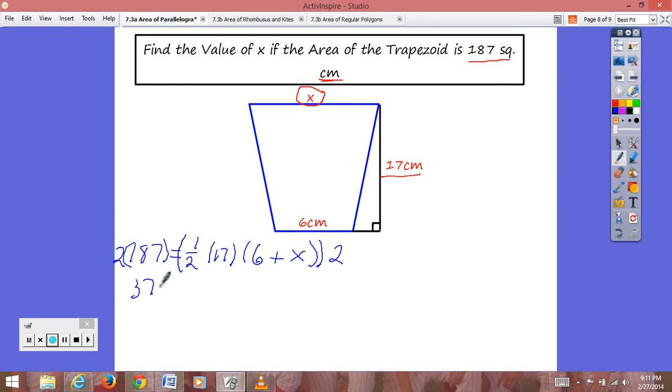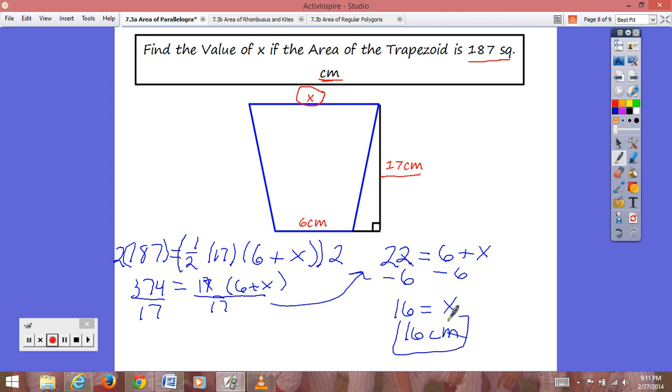that comes to be 374 equal to 17 times 6 plus X. So we divide both sides, and we divide both sides by 17, and that equals 22 is equal to 6 plus X. So we subtract 6 from both sides, and we get 16 is equal to X, and that is 16 centimeters. So that is our value for X.